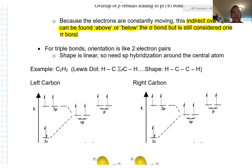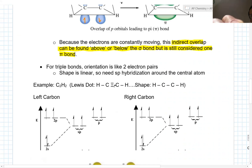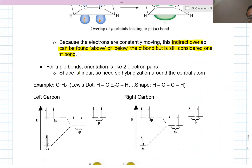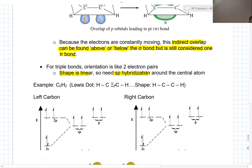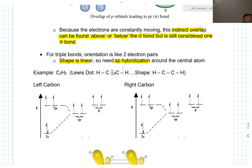What about C2H2? For triple bonds, the orientation is like two pairs, the shape is linear, so you need SP hybridization around the central atom. Since the shape is linear, it's SP hybridization. For example, let's say we had our Lewis dot structure: HC triple bond CH. Remember the shape — these three bonds merge into one.